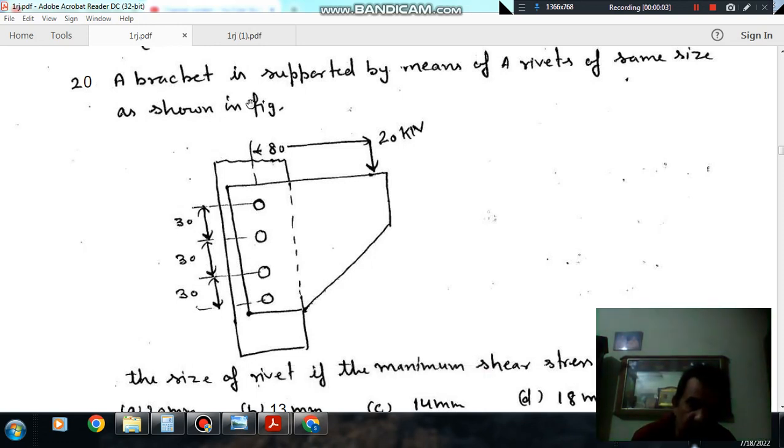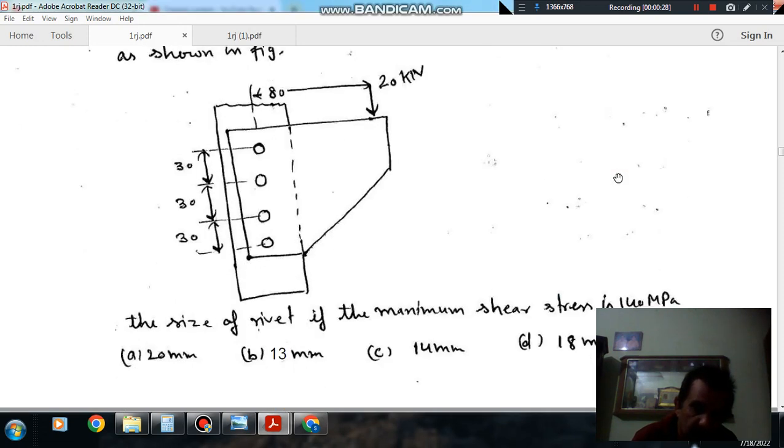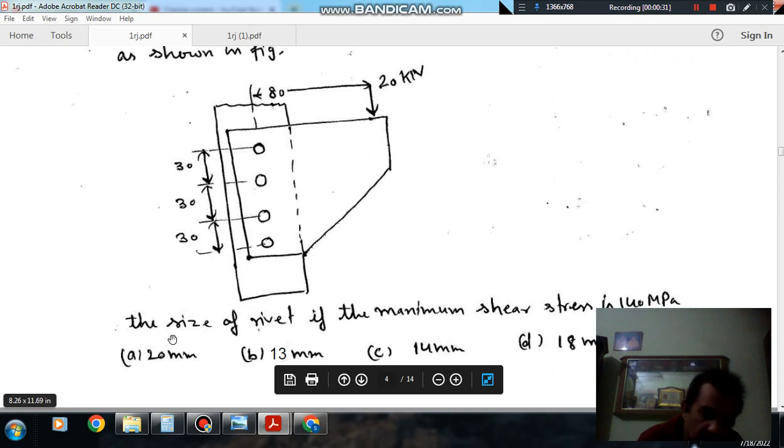Hello, welcome again. We are solving some questions of machine design, the topic is riveted joint. Question number 20 is: a bracket is supported by means of four rivets of same size as shown in fit. The eccentricity of rivet is 80 mm and its value is 20 mm. The question is: the size of rivet if the maximum shear stress is 140 MPa. Option A is 20 mm, option B is 13 mm, option C is 14 mm, and option D is 18 mm.